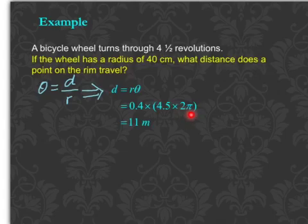2π radians is simply the angle for one complete revolution. The answer is 11 meters.